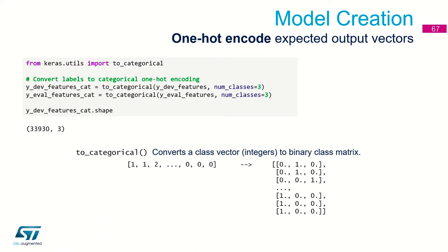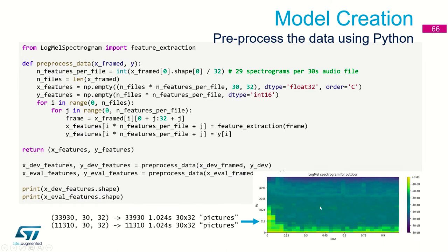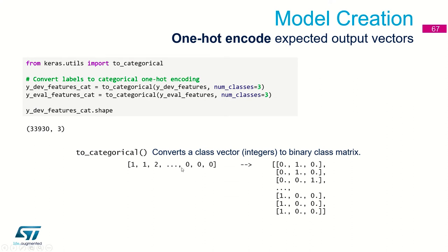The next step after preparing the learning dataset is quite technical. Each picture is the input to our neural network, and we know what it represents — for example, a particular picture represents the outdoor audio scene. This is our ground truth data. Picture number N represents class number M. We have three classes assigned starting from zero: zero means indoor, one means outdoor, two means in-vehicle.